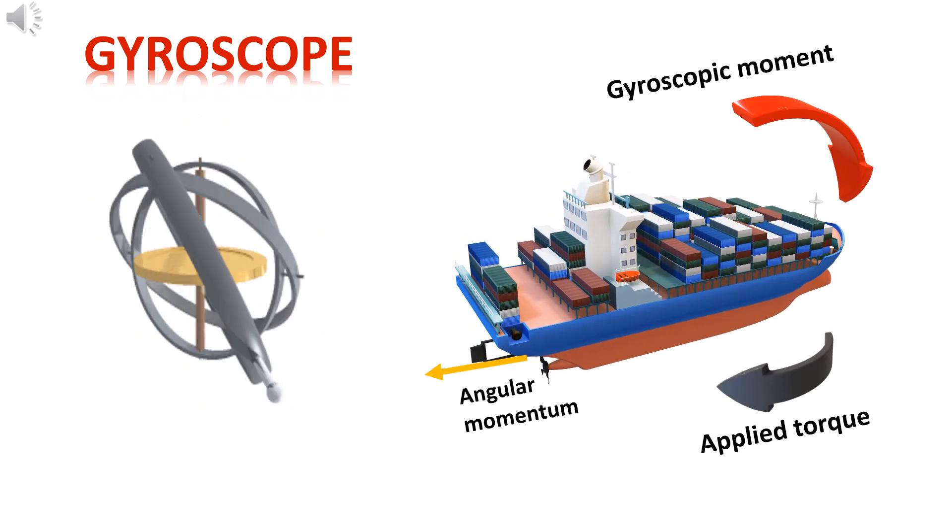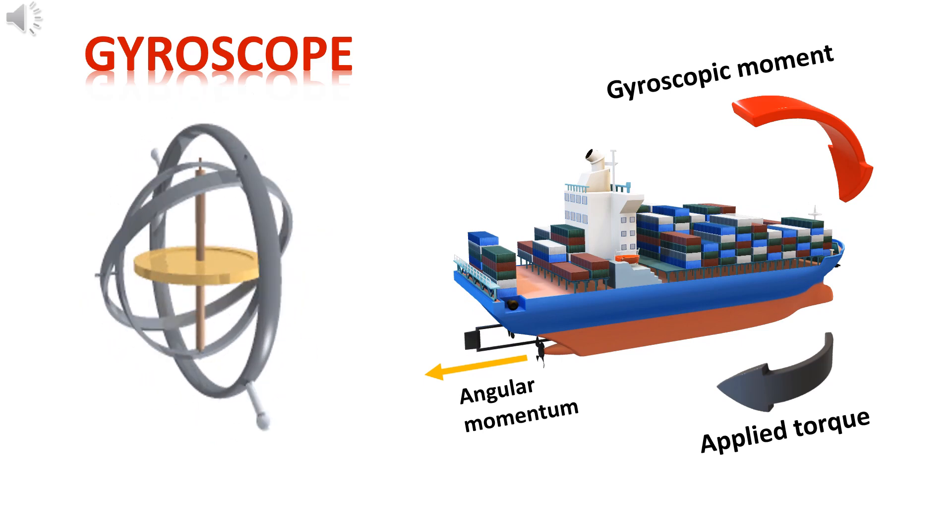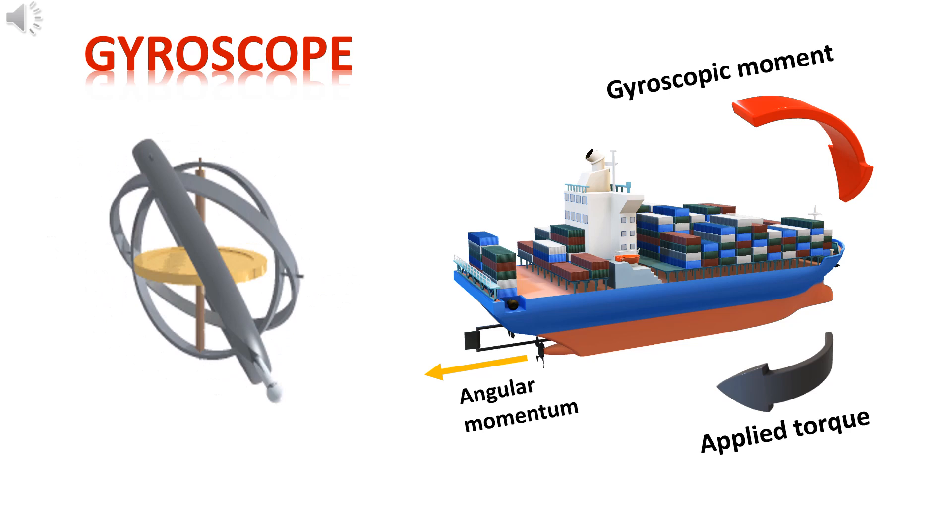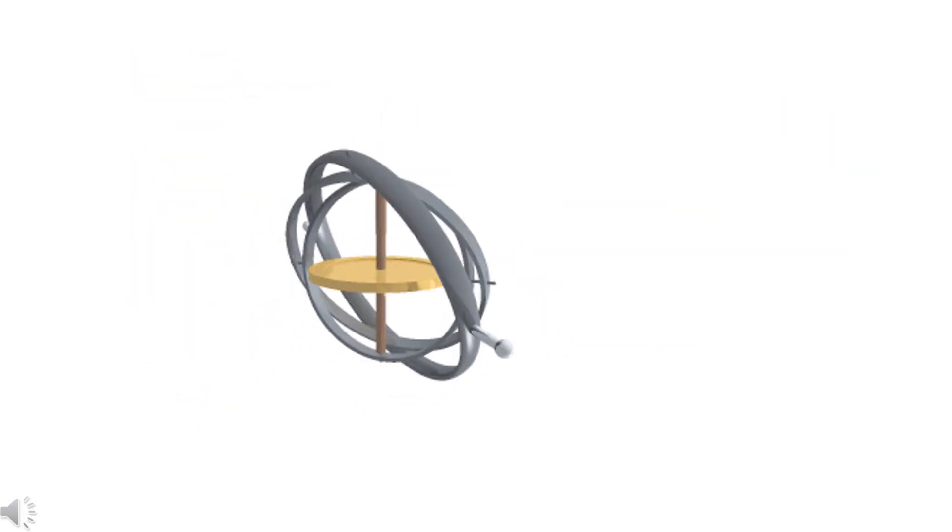But the gyroscopic effect is a common physical effect which can be observed in all spinning objects. To understand the gyroscopic effect, we should understand angular momentum.